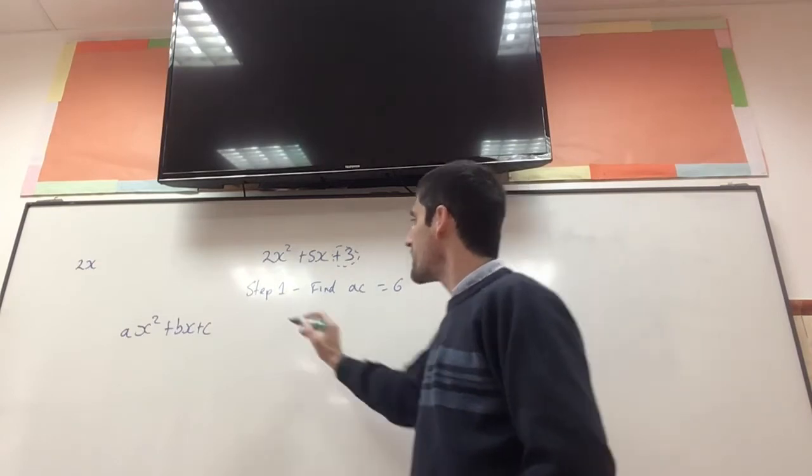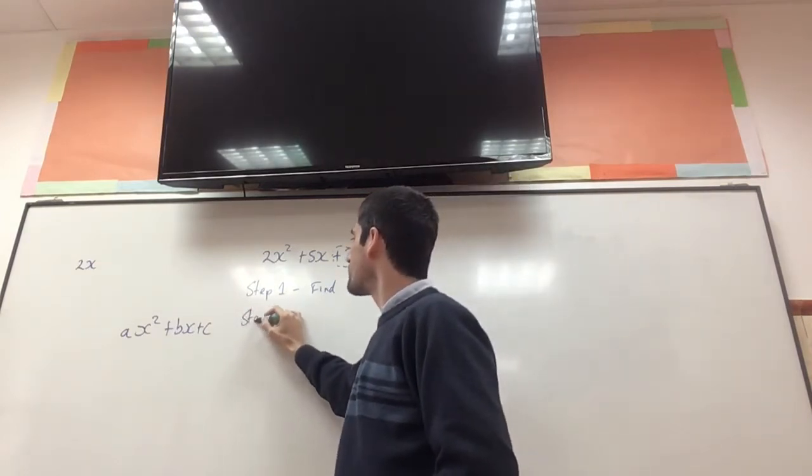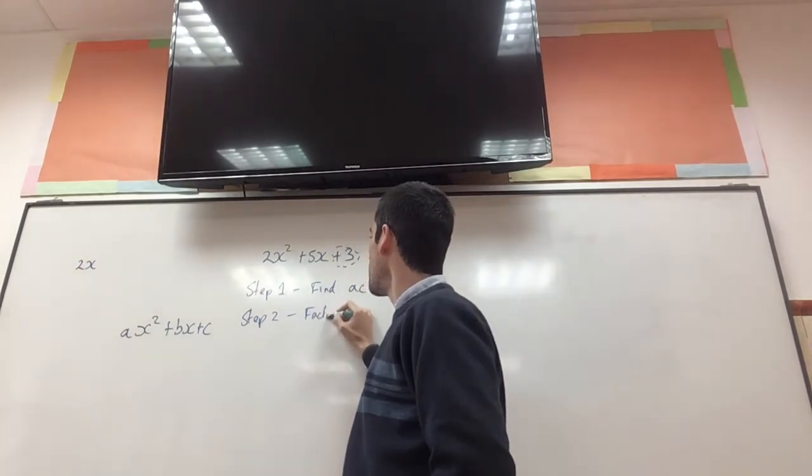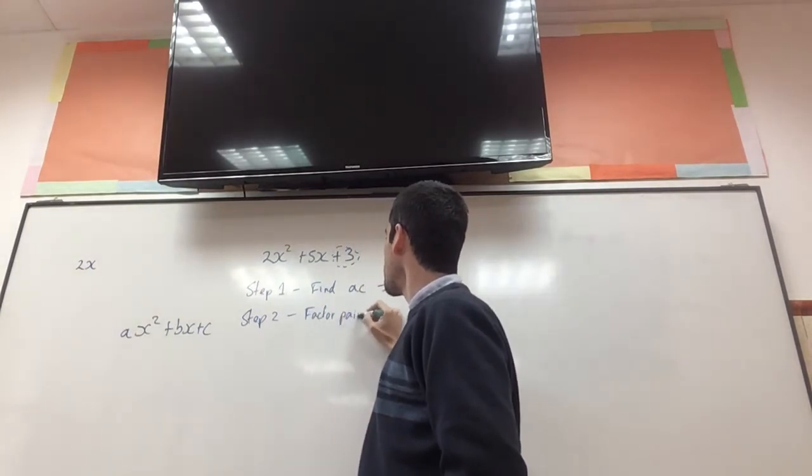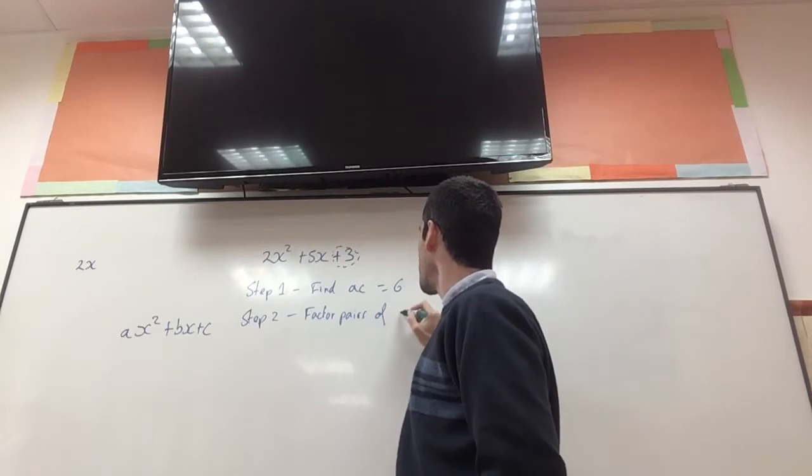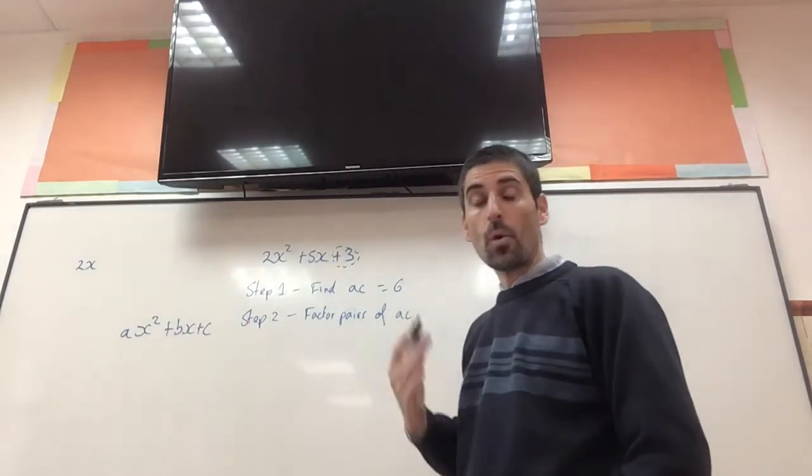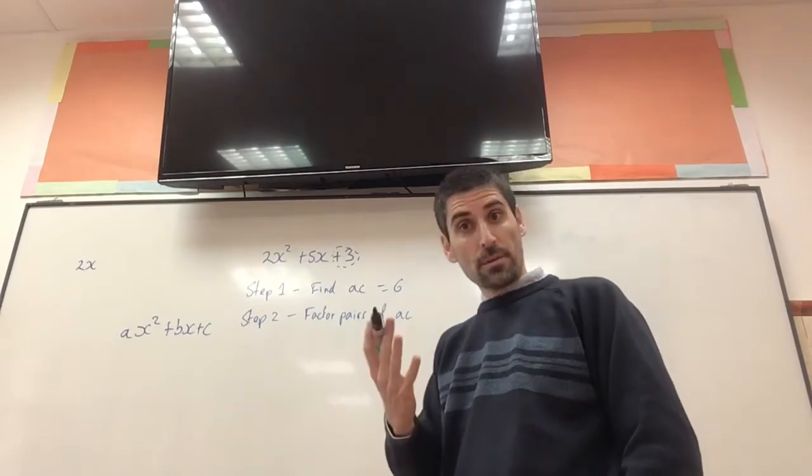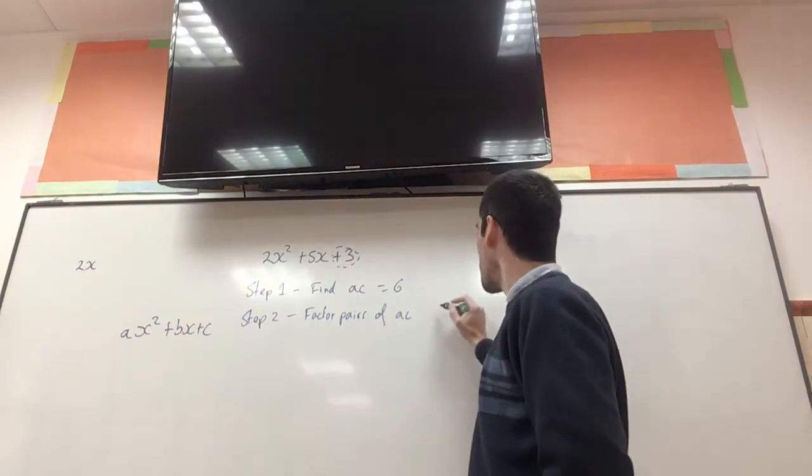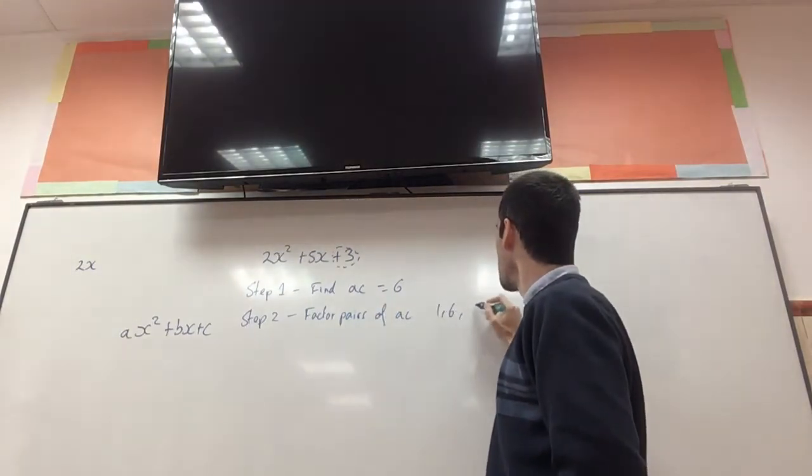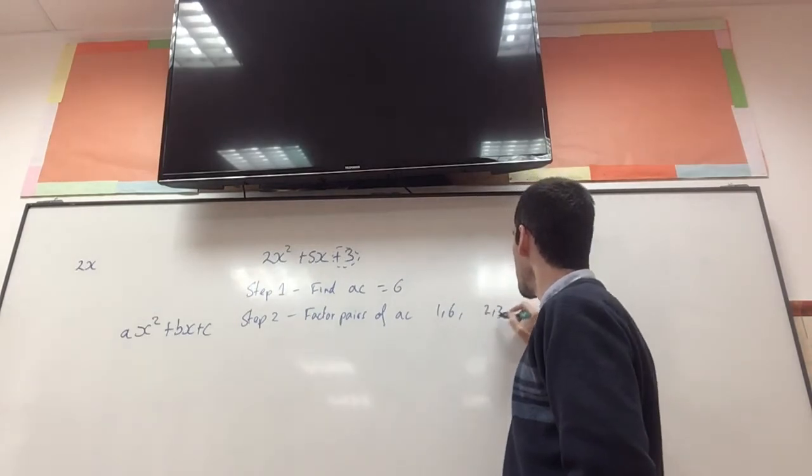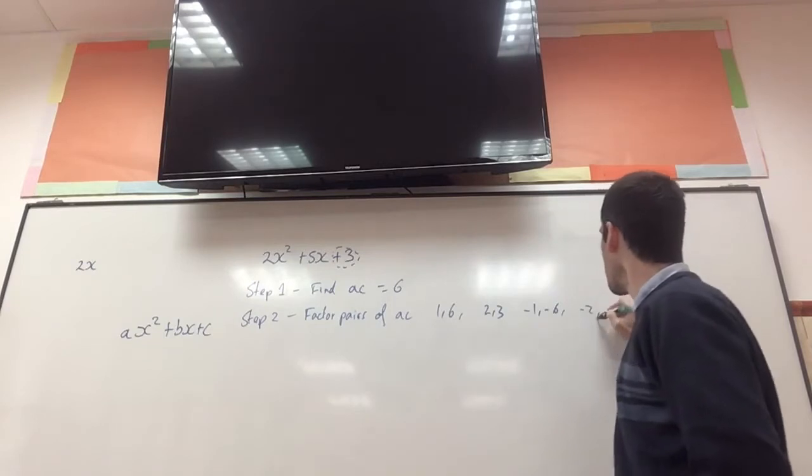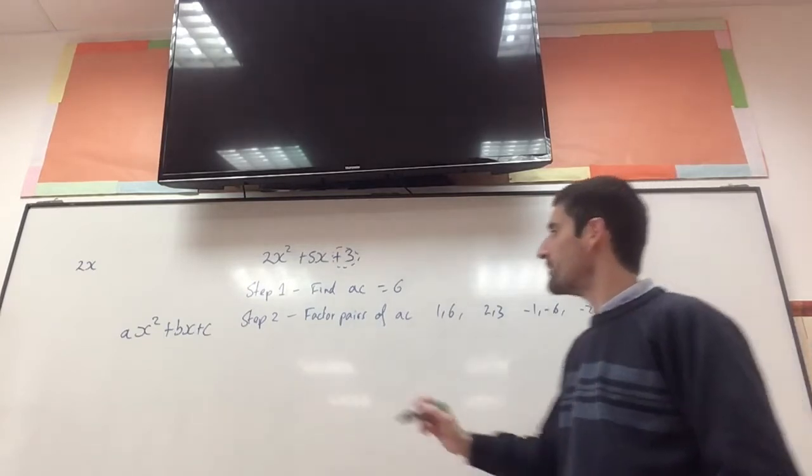Then, step 2. Find the factor pairs of ac. So, what pairs of numbers multiply to make 6. And remember, you've got to think of your negative numbers. So in my case, I've got 1 and 6, 2 and 3, minus 1 and minus 6, minus 2 and minus 3.